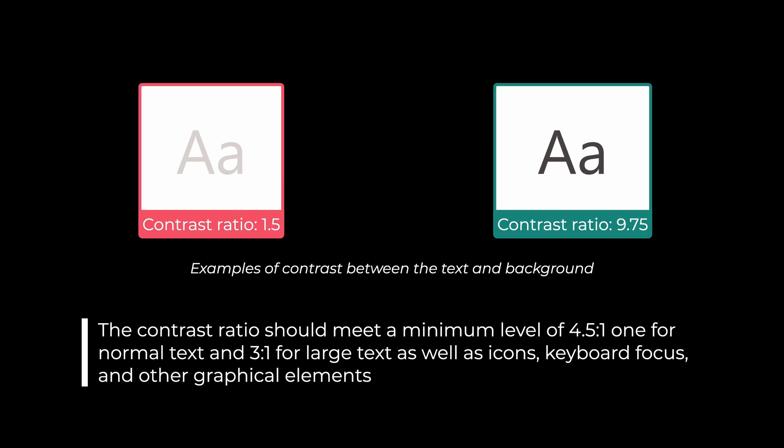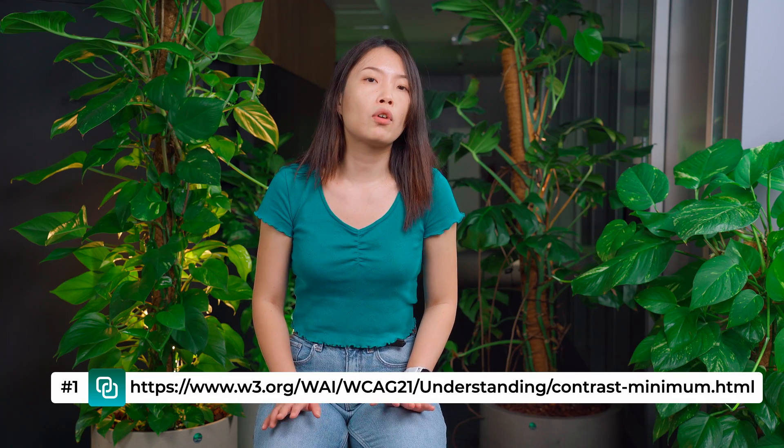Let's start with color contrast. This is crucial to ensure that text and visual content are legible to everyone with visual impairment, from a low vision disability to standing outside on a sunny day. We adhere to the web content accessibility guidelines that set standards for color contrast based on the contrast ratio between the foreground and the background. The contrast ratio should meet a minimum level of 4.5 to 1 for normal text, and 3 to 1 for large text as well as icons, keyboard focus, and other graphical elements.